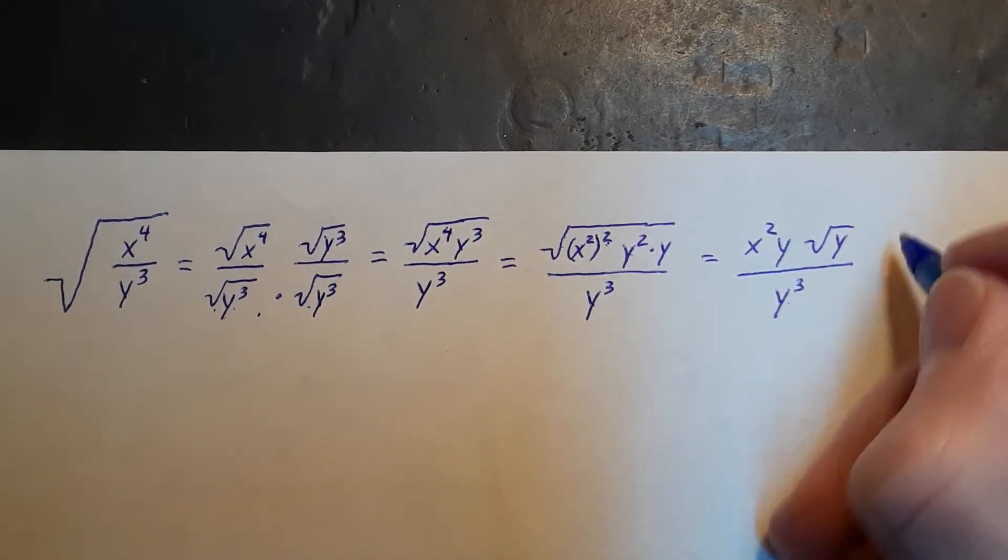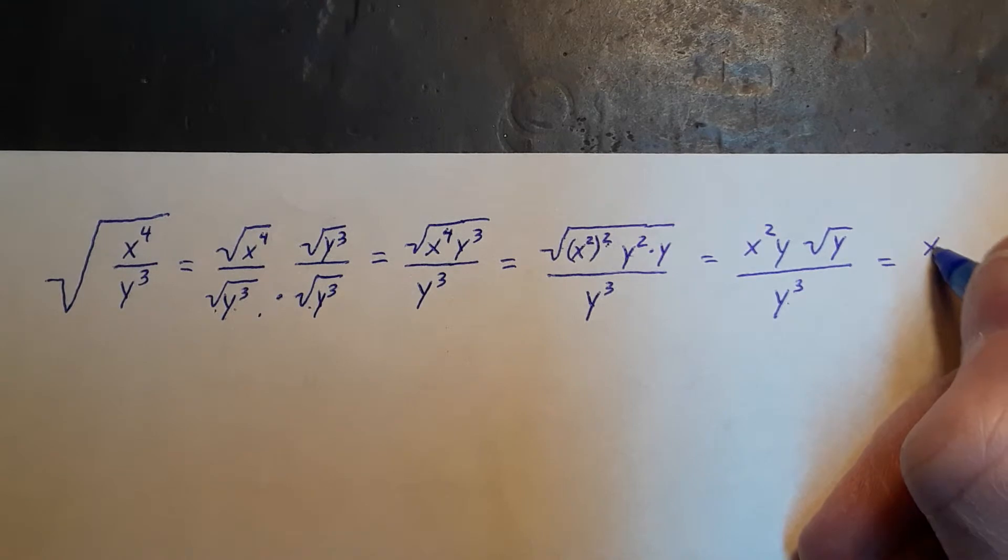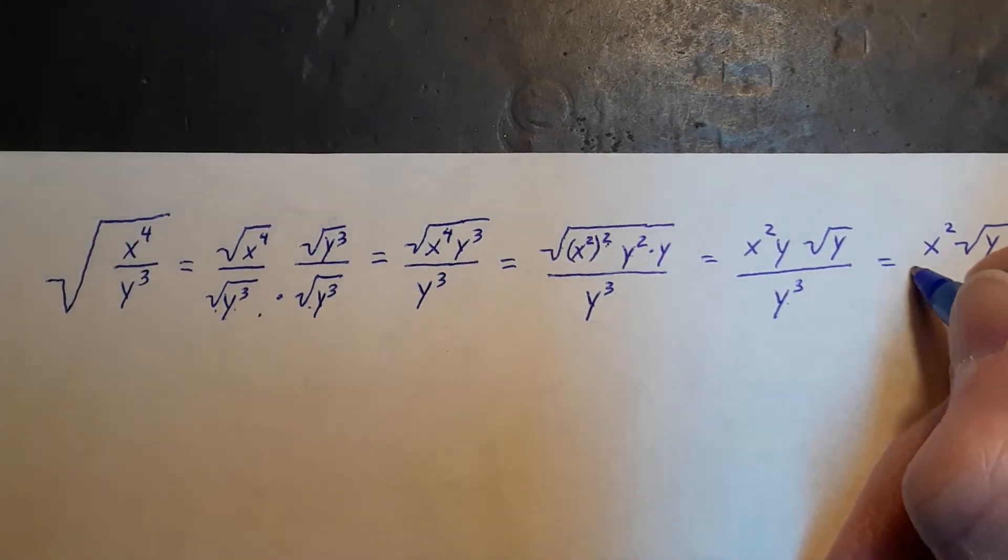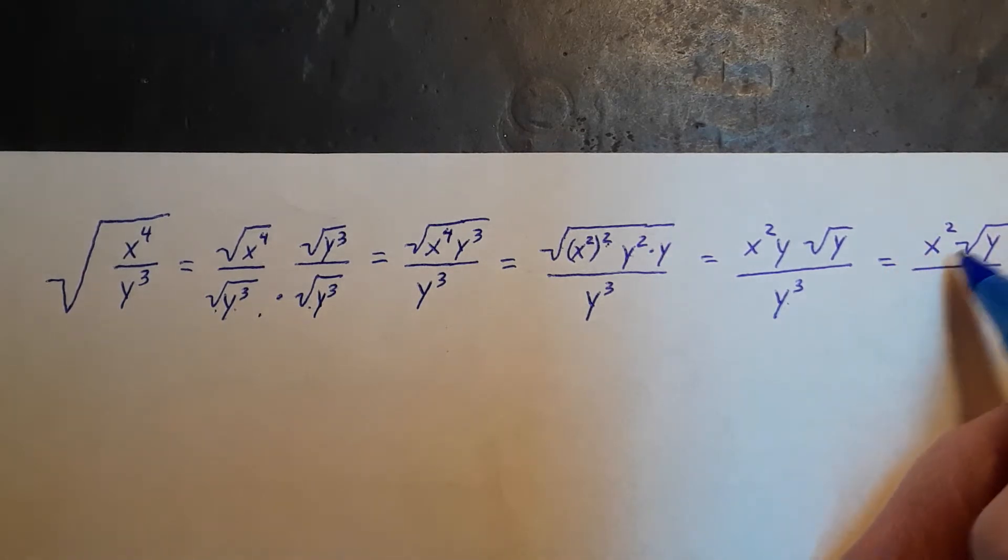This y and y cubed will reduce in this fraction. Y divides into y one time. So we have the product in the numerator as x squared times one times square root of y.